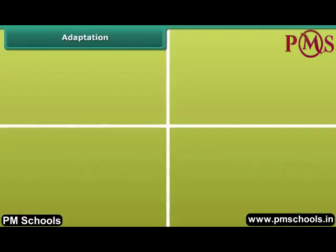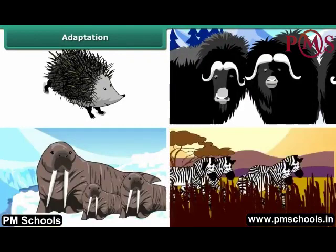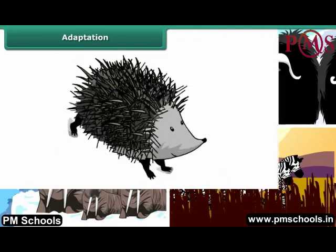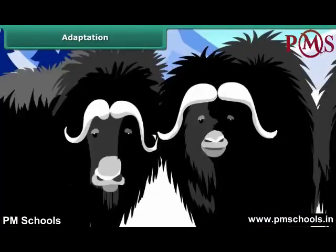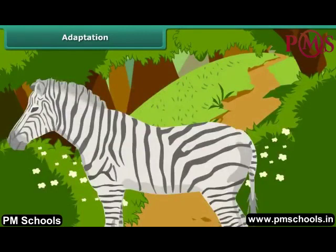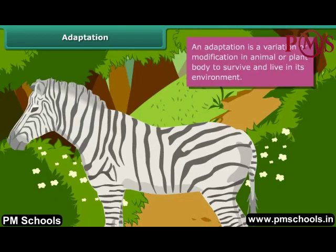Animals like porcupine, yak, seal, and zebra have different types of physical features to survive and live in their surroundings. Porcupine has needle-shaped quills, yak has thick fur, and zebra has striped skin which can be easily mistaken as bushes. These specific features are known as adaptations. An adaptation is a variation or modification in an animal or plant body to survive and live in its environment.